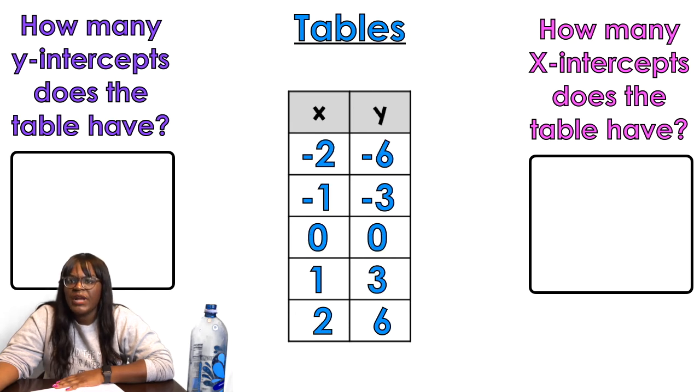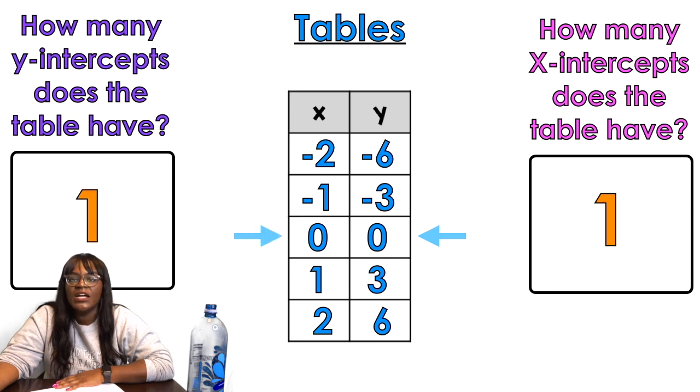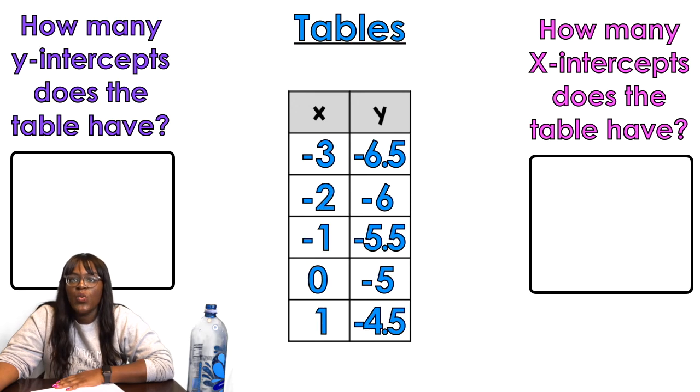So this should be pretty simple from now on. How many x-intercepts does it have? Remember, look for y values that are zero. So one. Now how many y-intercepts? Look for x values that are zero. Ta-da. Fantastico, all right, next one. How many x-intercepts? Look for zeros in the y column. I don't see none. And then for y-intercepts, look for zeros in the x column. I see one. There we go.